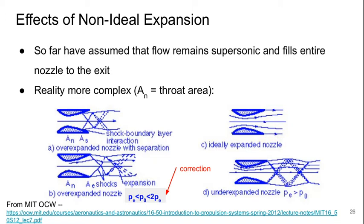Which means that the flow remains supersonic in the nozzle downstream of the throat and fills the whole nozzle up to the exit. But the reality is more complex. In these pictures, AN is the throat area instead of A star, and we have four possible cases.